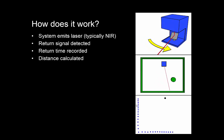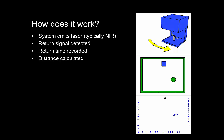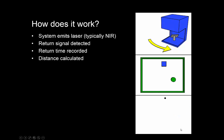Here's another way of what that system looks like, or at least how the principle works. As you can see, typically there's a mirror involved that scans from left to right and right to left, mapping out the location because we know the angle and we know the distance.